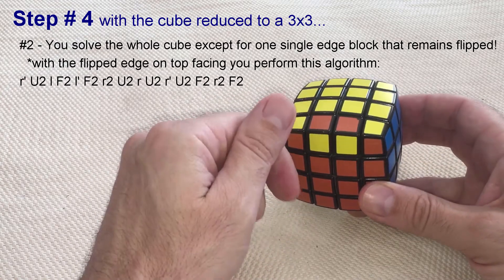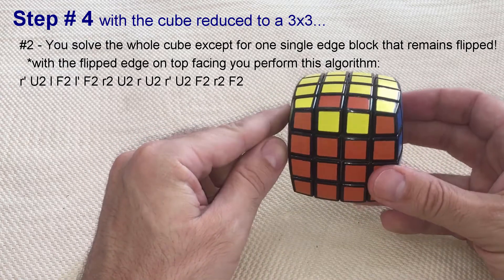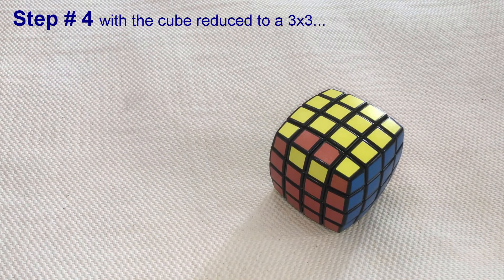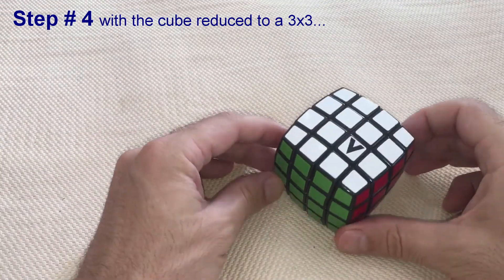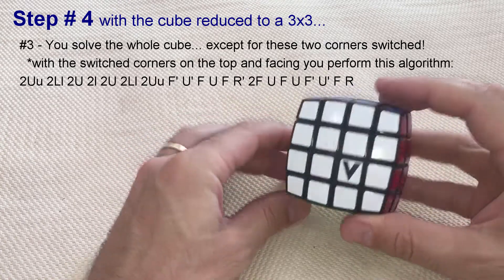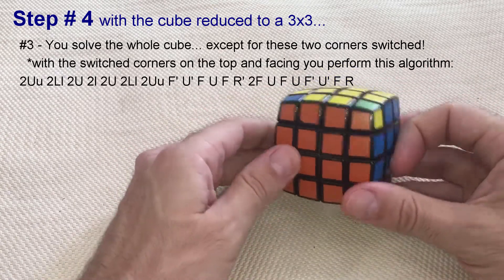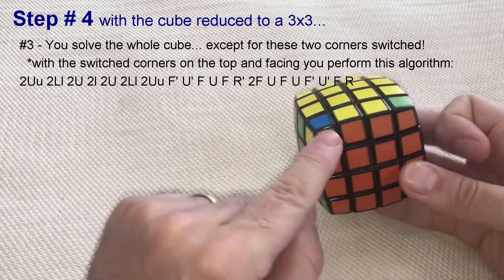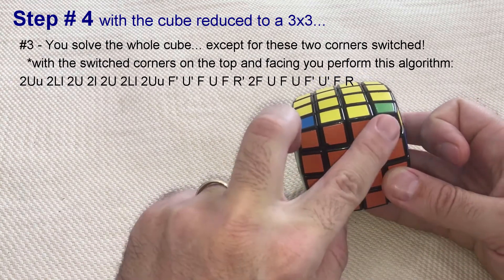This error is known as edge parity, and you can use this algorithm to fix it. Or, you solved the whole cube except for these two corners switched. This error is known as corner parity, and you can use this algorithm to fix it.